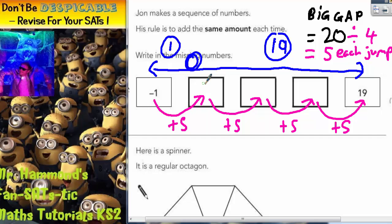So negative 1 add 5 is 4. 4 add 5 is 9. 9 add 5 is 14. And if all has gone to plan, 14 add 5 should give us the last box. 14 add 5 is indeed 19.